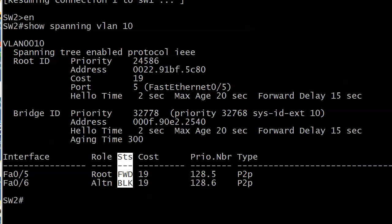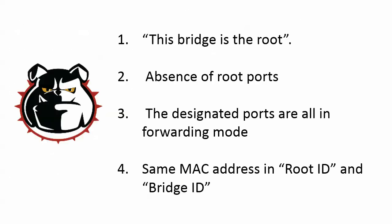Let's go back to the board and review all four. First off, if you're on the root, you're going to see 'this bridge is the root.' Second, if you don't see any root ports, you know you're on the root switch itself. Third, the designated ports are all going to be in forwarding mode. And fourth, the same MAC address in root ID and bridge ID. We didn't see any of those on this switch, so we know definitely that we were not on the root.